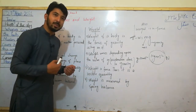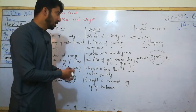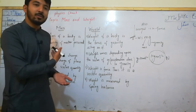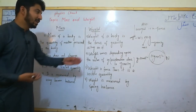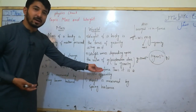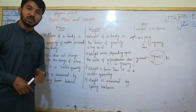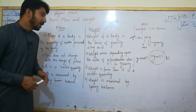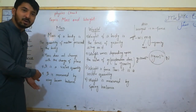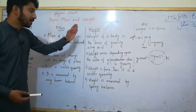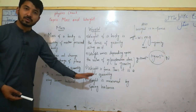Let me repeat the difference between mass and weight. When place changes, weight changes. Mass is a scalar quantity. Weight is a vector quantity because it is a force.